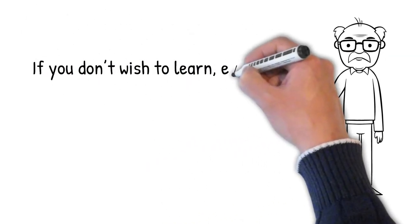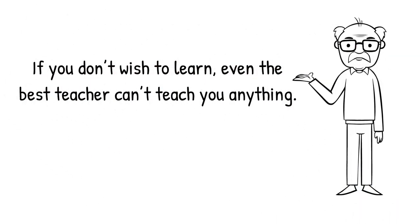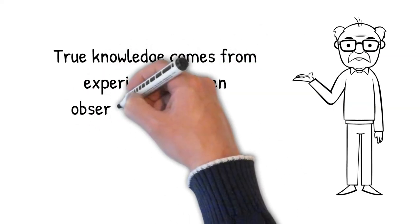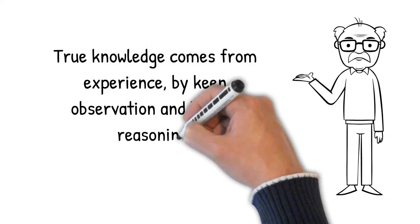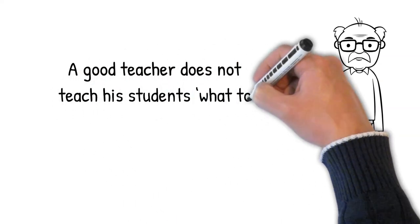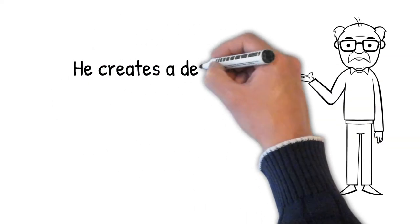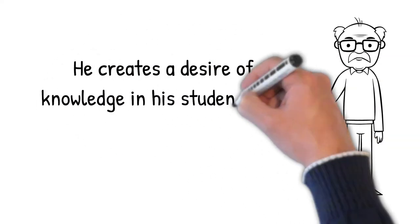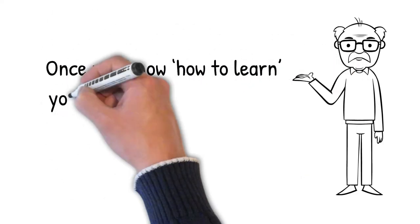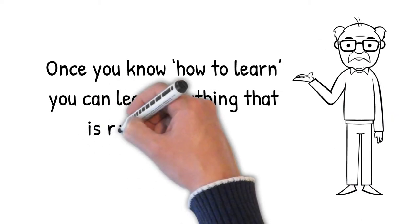If you don't wish to learn, even the best teacher can't teach you anything. True knowledge comes from experience by keen observation and logical reasoning. A good teacher does not teach his students what to learn. He creates a desire for knowledge in his students and trains them in how to learn. Once you know how to learn, you can learn anything that is required by you.